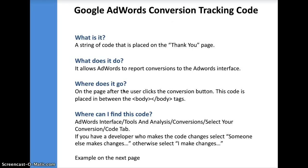Where you can find this code is in the AdWords interface under Tools and Analysis. Then you select Conversions, and select the conversion you are actually tracking. Once you're in there, select the Code tab. In this Code tab, you're going to have two options: whether someone else makes the changes to your site, or you make the changes. If you're making the changes, select 'I make the changes' and copy and paste the code in the body tag. If you have a developer on site, select 'Someone else makes the changes' and it will email your developer the code.